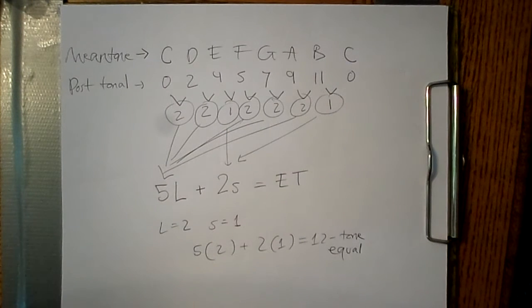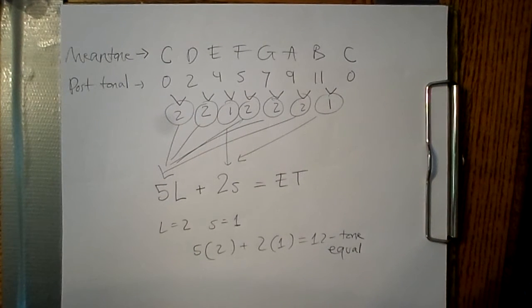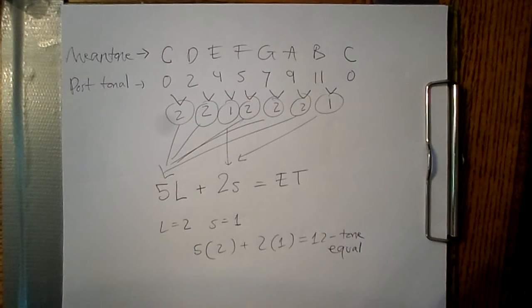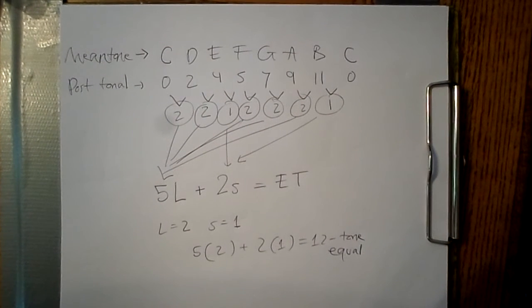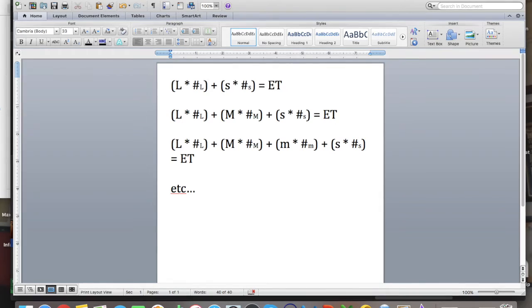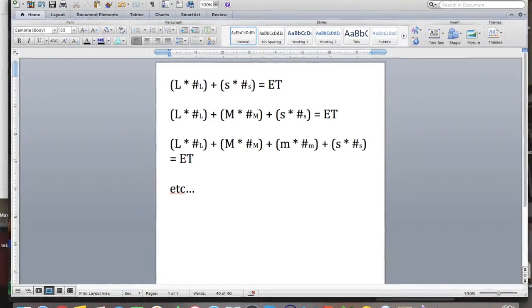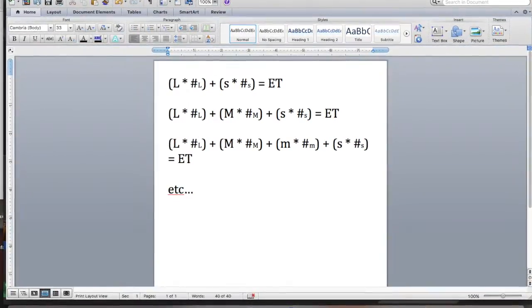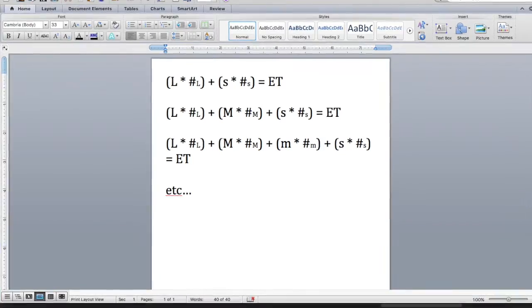This kind of format works really well in equal temperaments, where the L and S need to be integers, and most of this discussion will be about equal temperaments. Then, the number of L times L plus number of S times S equation yields the equal temperament, or ET of the octave.